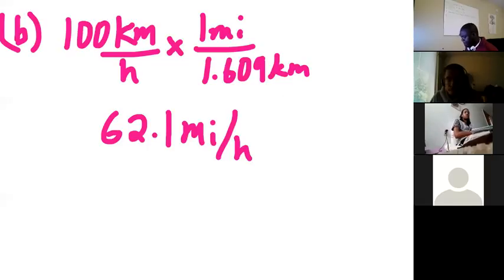So this will be 62.1 miles per hour. Now how did you get 62.1? Take 100 divided by 1.609. You get 62.1, again three significant digits.